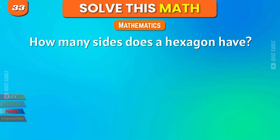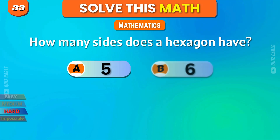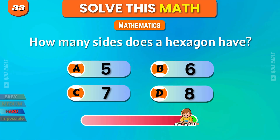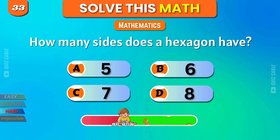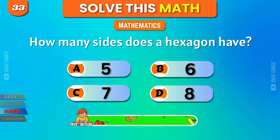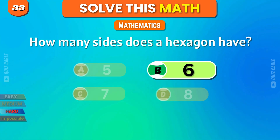How many sides does a hexagon have? 5, 6, 7, 8. That's right, 6.